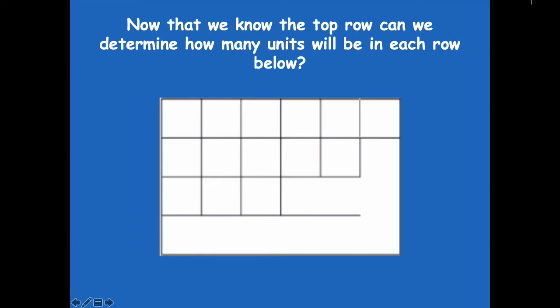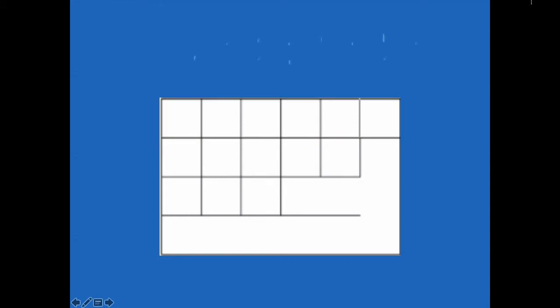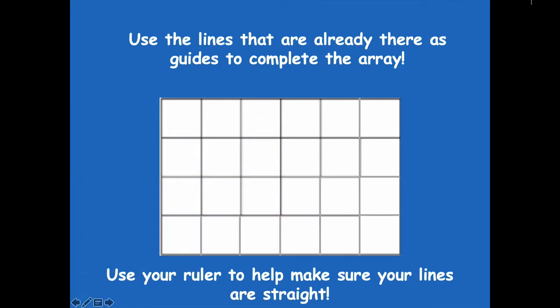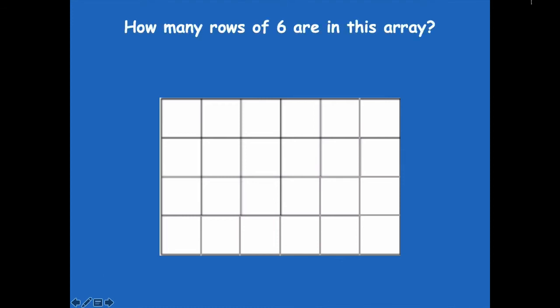So use the lines that are already there as guides to complete the array. Use your ruler to help make sure the lines are straight. Okay, so we can fill them in just like that. How many rows of six are in this array?